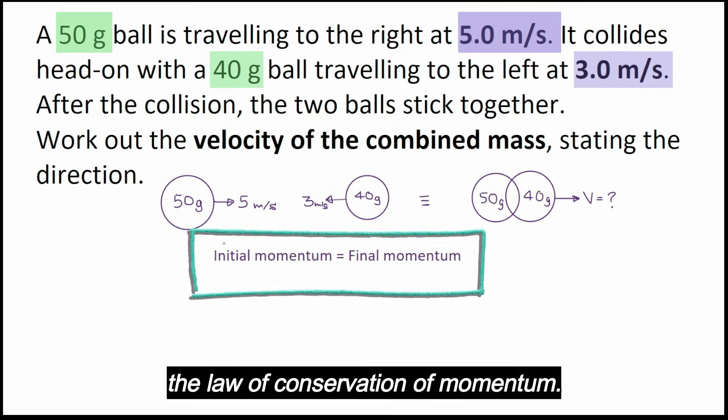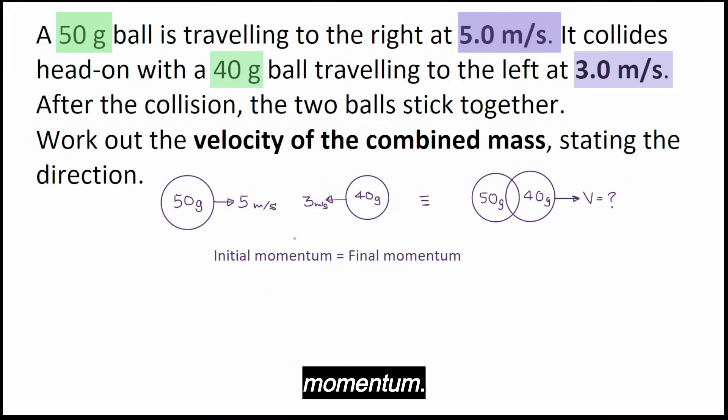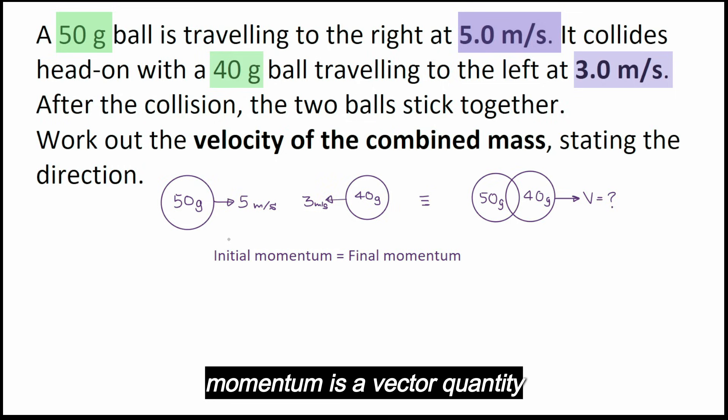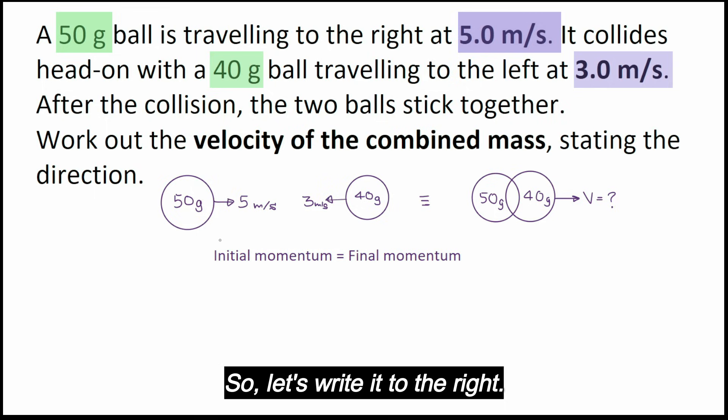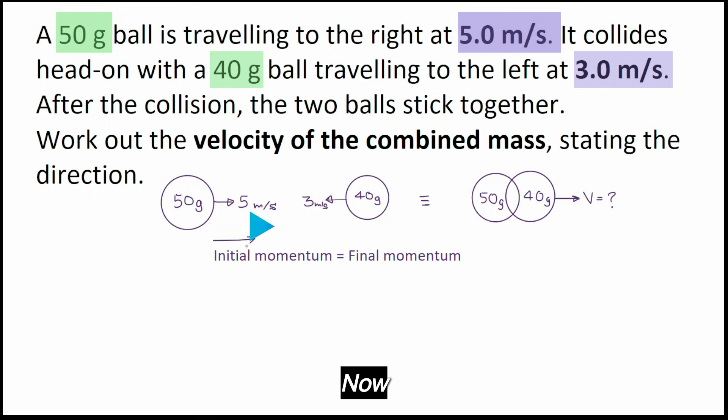So first, we are going to write the law of conservation of momentum here. Initial momentum is equal to final momentum. Now momentum is a vector quantity, and we can write the law of conservation of momentum only in a given direction. So let's write it to the right.